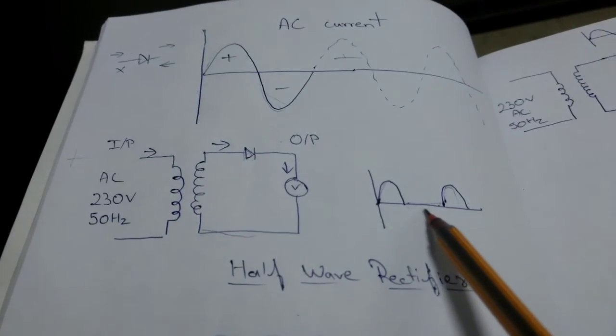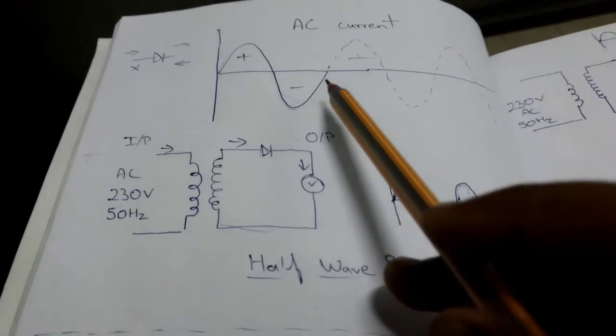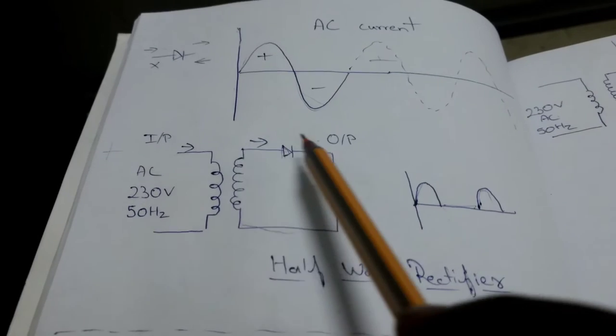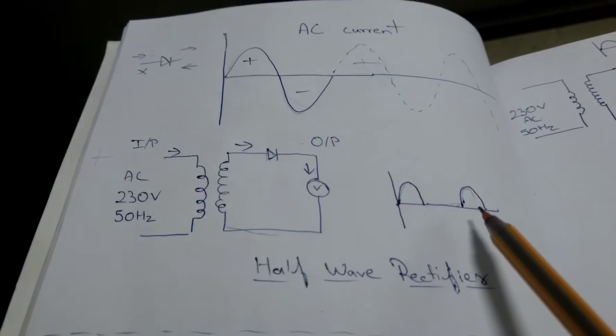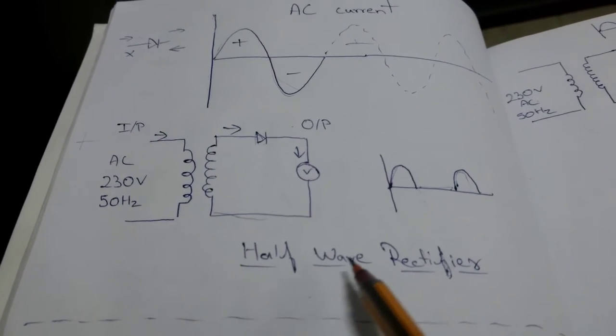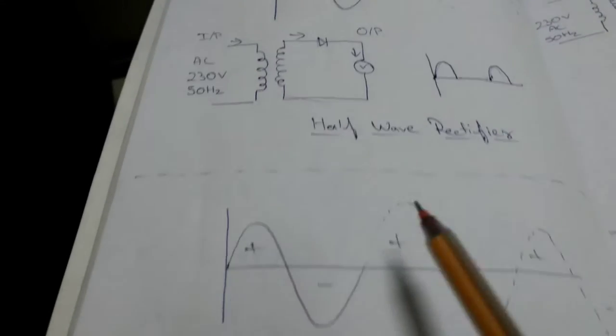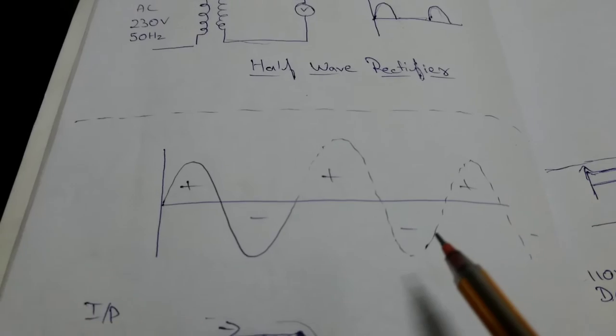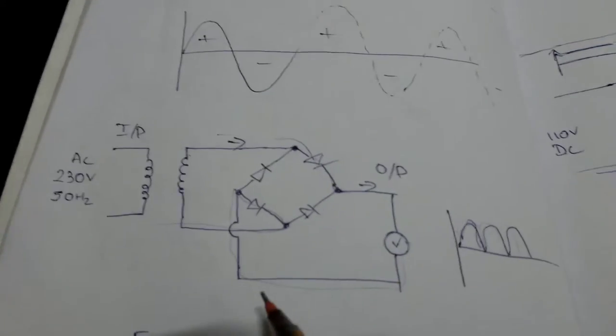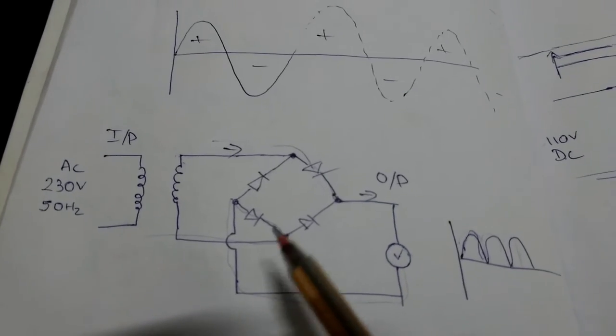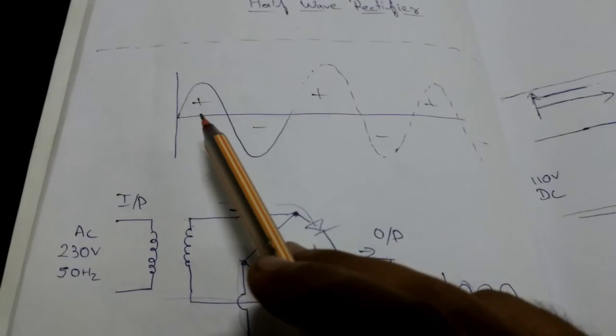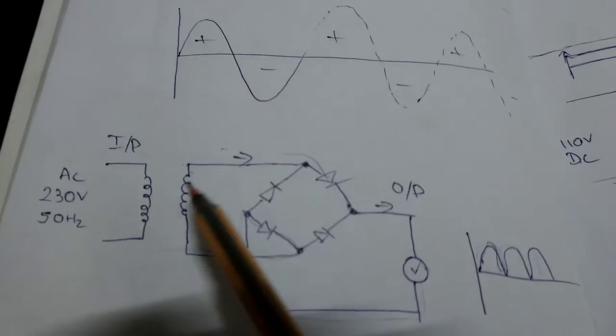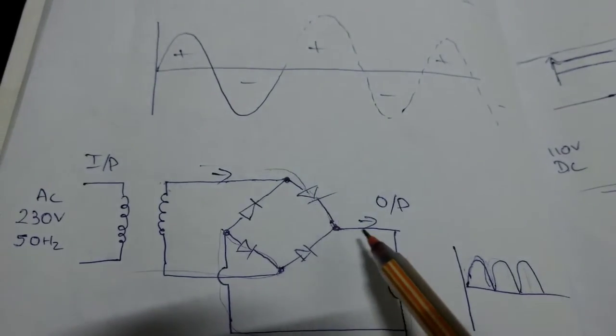So again for another positive half cycle you will get an output from the half wave rectifier. So this is a condition for a half wave rectifier. Now let's just see the condition with a full wave rectifier. Here we have a diode bridge. So this will rectify the AC voltage for both positive and the negative half cycle.